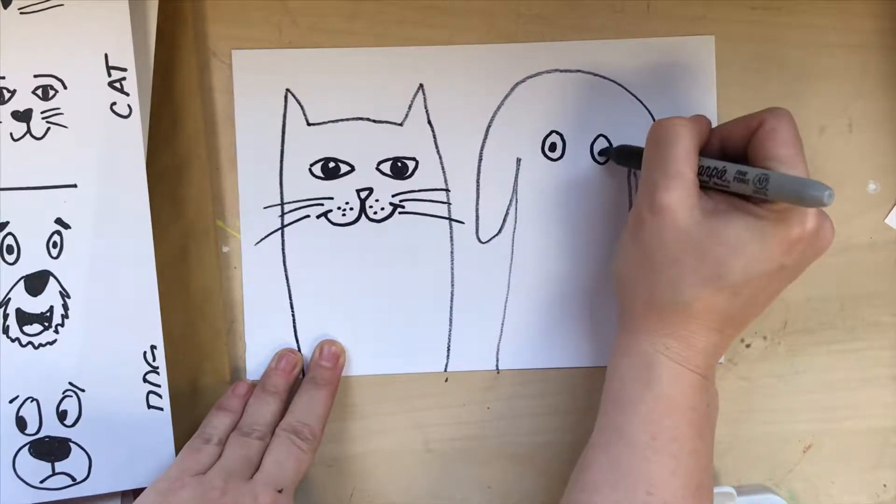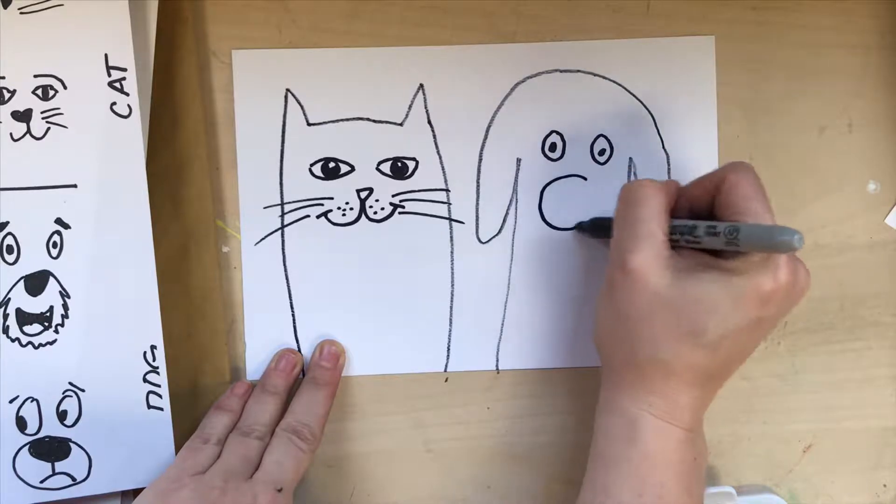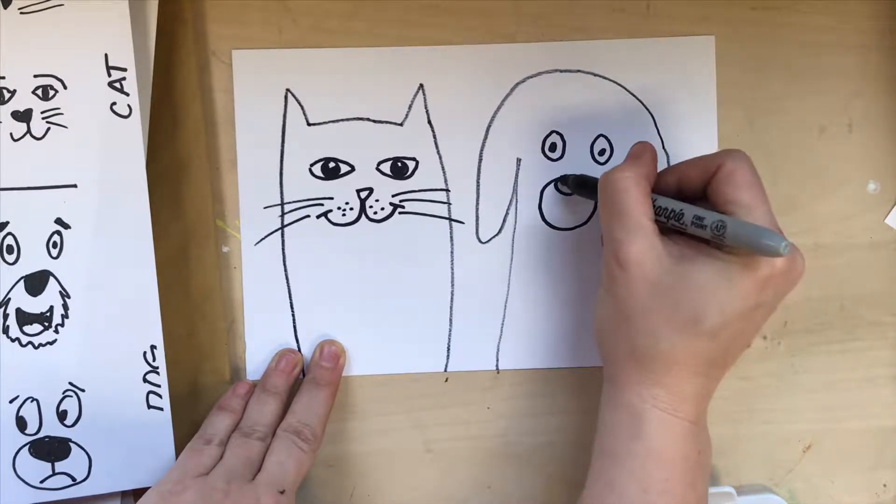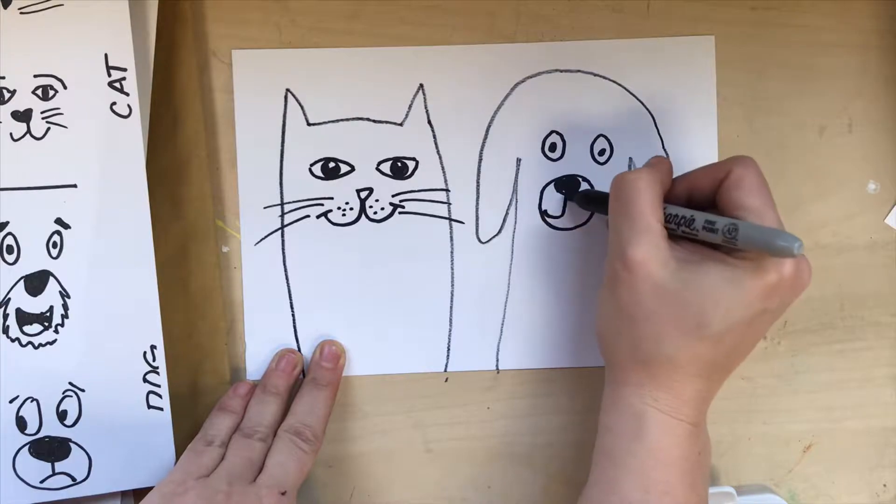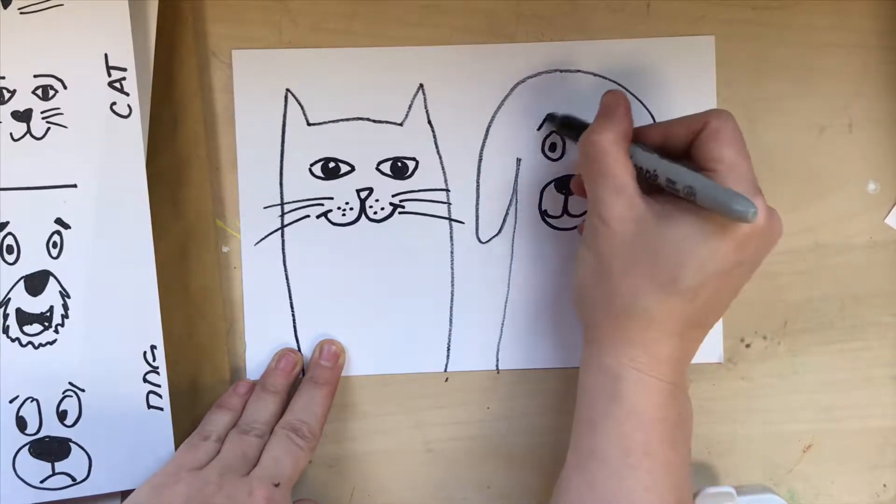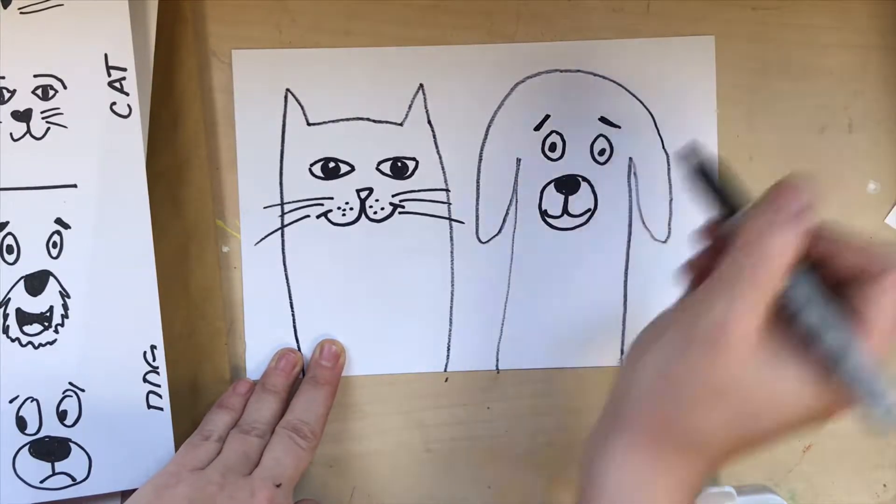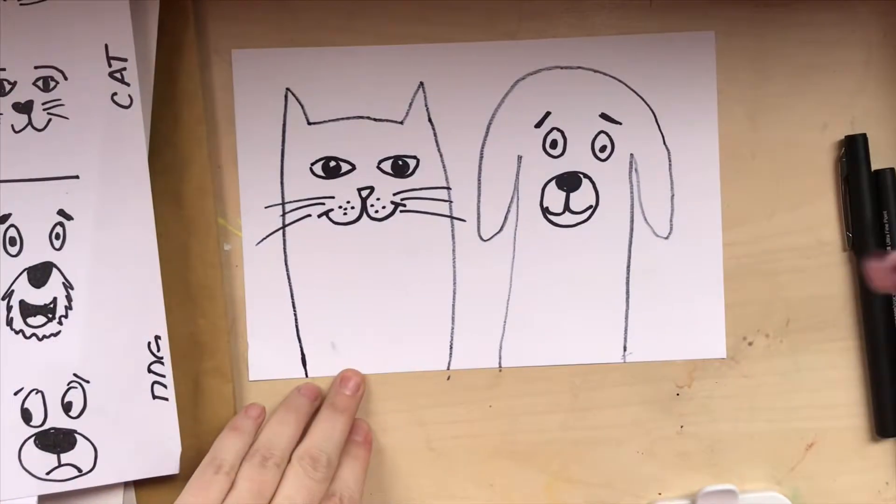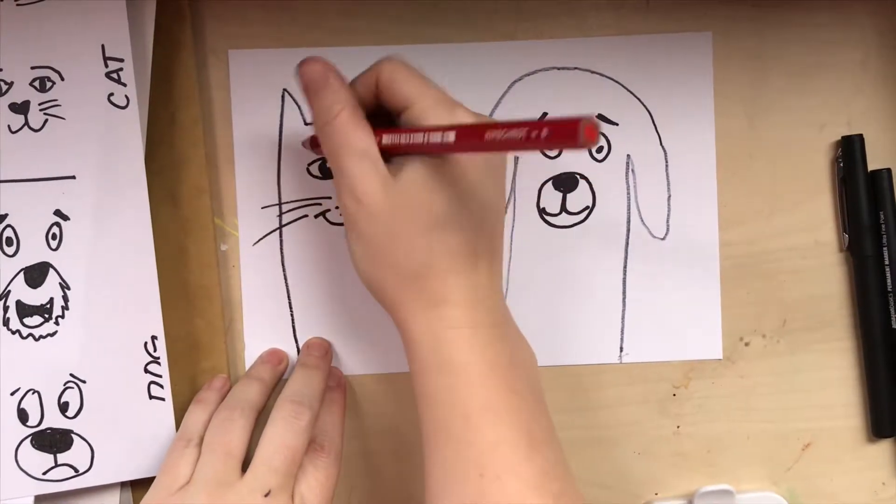So a dog might have a different facial expression. I drew a big circle for my dog muzzle, which is the mouth nose part. I drew an oval nose, and I drew those two U's for the mouth. My dog has a little bit different facial expression.